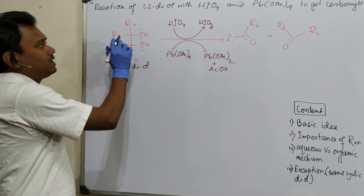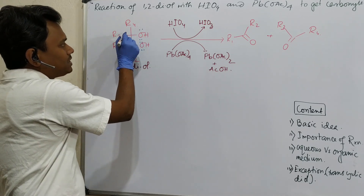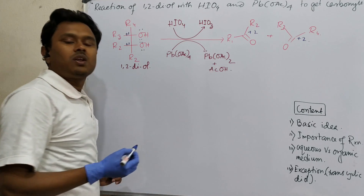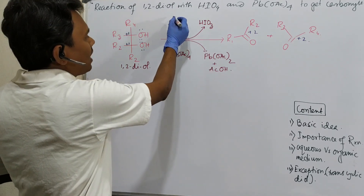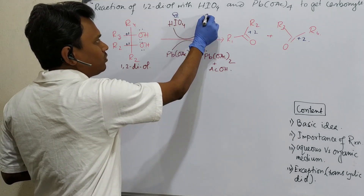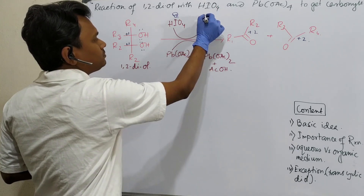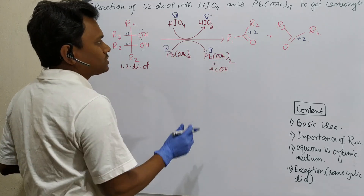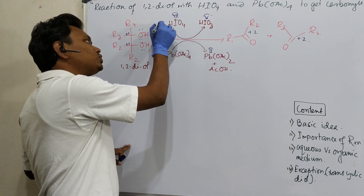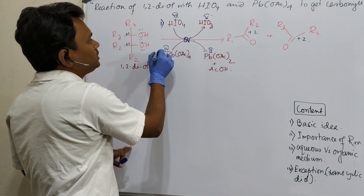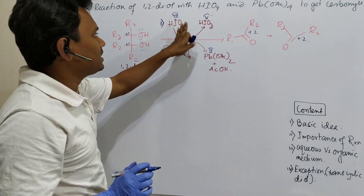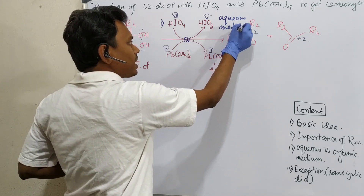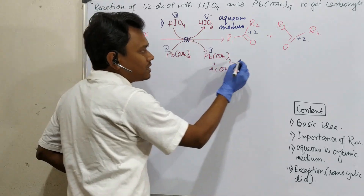In this reaction, consider this carbon — it is attached to four carbons and is at +1 oxidation state, while this other carbon is at +2. So this is an oxidation. Someone must be reduced. Periodic acid is in +7 oxidation state, going to +5. Similarly, lead tetraacetate is in +4 oxidation state, converting to +2. Periodic acid is used for aqueous medium, and lead tetraacetate is for organic medium.